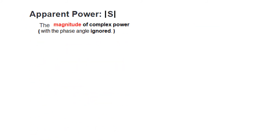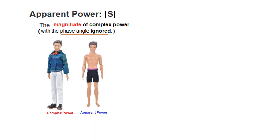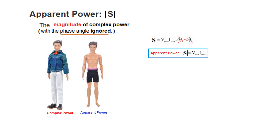Apparent power is the magnitude of the complex power — the complex power with its phase angle ignored. As an analogy: if complex power is the full formula V_rms · I_rms with its angle, then apparent power is what remains when you remove the angle, giving only the magnitude V_rms · I_rms.